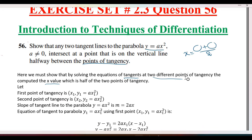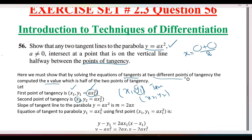If the first point of tangency is (x1, y1) and the second point is (x2, y2), these two points are on the parabola. Since the points are on the parabola, y1 equals x1 squared and y2 equals x2 squared. So now we have two points of tangency.